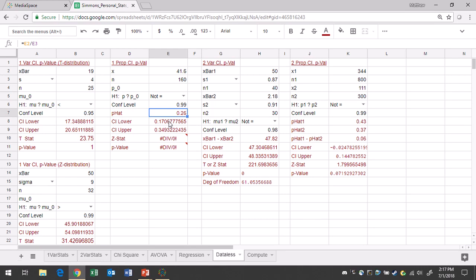And it turns out that in this specific instance, my confidence lower limit is going to be 0.171, and my upper limit will be 0.349.